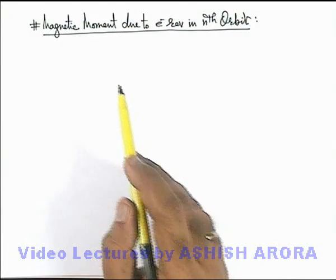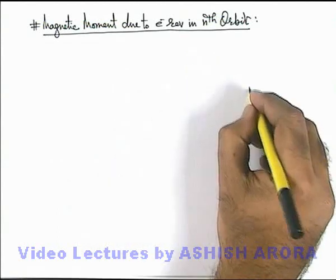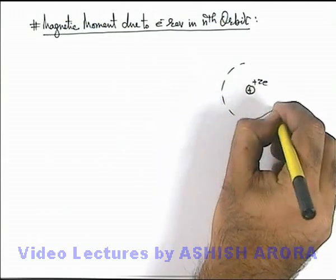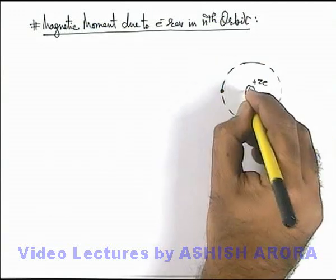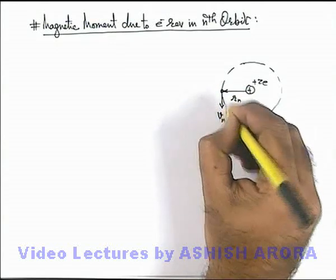Let us discuss the magnetic moment due to electron revolution in n-eth orbit. As we have seen, if in the surrounding of a nucleus an electron is revolving in n-eth orbit, say it is of radius r-n and moving with a velocity v-n.